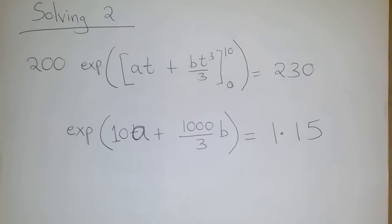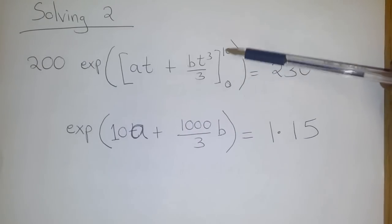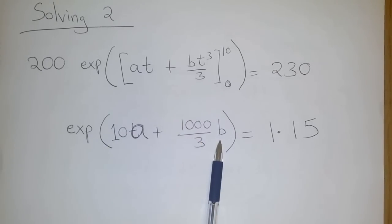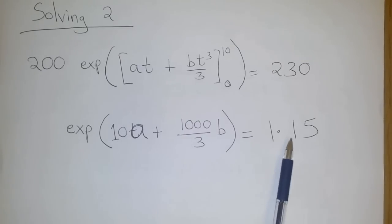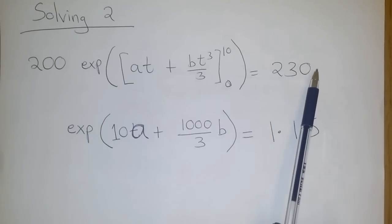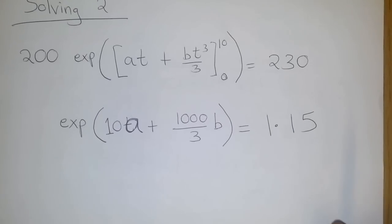And solving equation 2 by simplifying the integral and then introducing the limits, we end up with the exponential of 10a plus 1000 over 3 b, which is equal to 1.15. Remember, we also divided through by 200 on both sides to end up with 1.15 on the right-hand side.